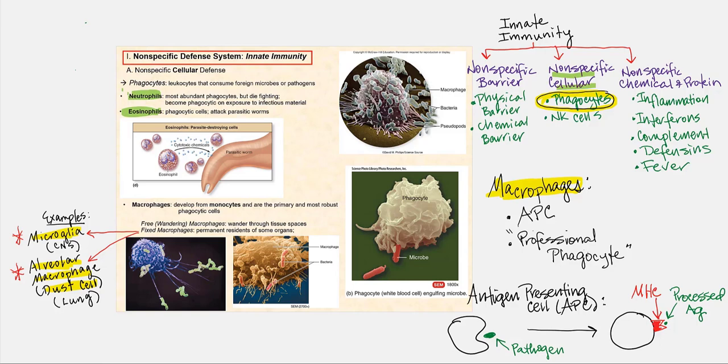Another type of granulocyte are the eosinophils — phagocytic cells whose specialty is parasitic worms. This image shows what eosinophils will do: they are parasite-destroying cells that release cytotoxic chemicals to destroy parasitic worms. However, they are not fail-proof — there are still some parasitic worms that, despite the best effort of eosinophils, they are unable to neutralize.